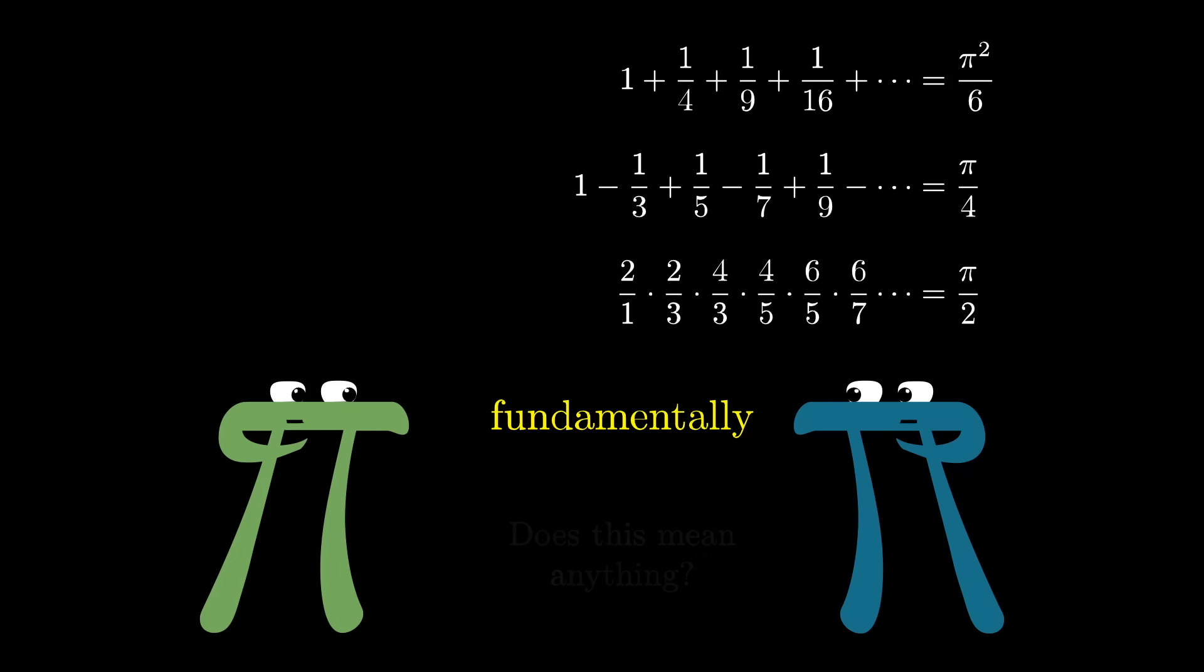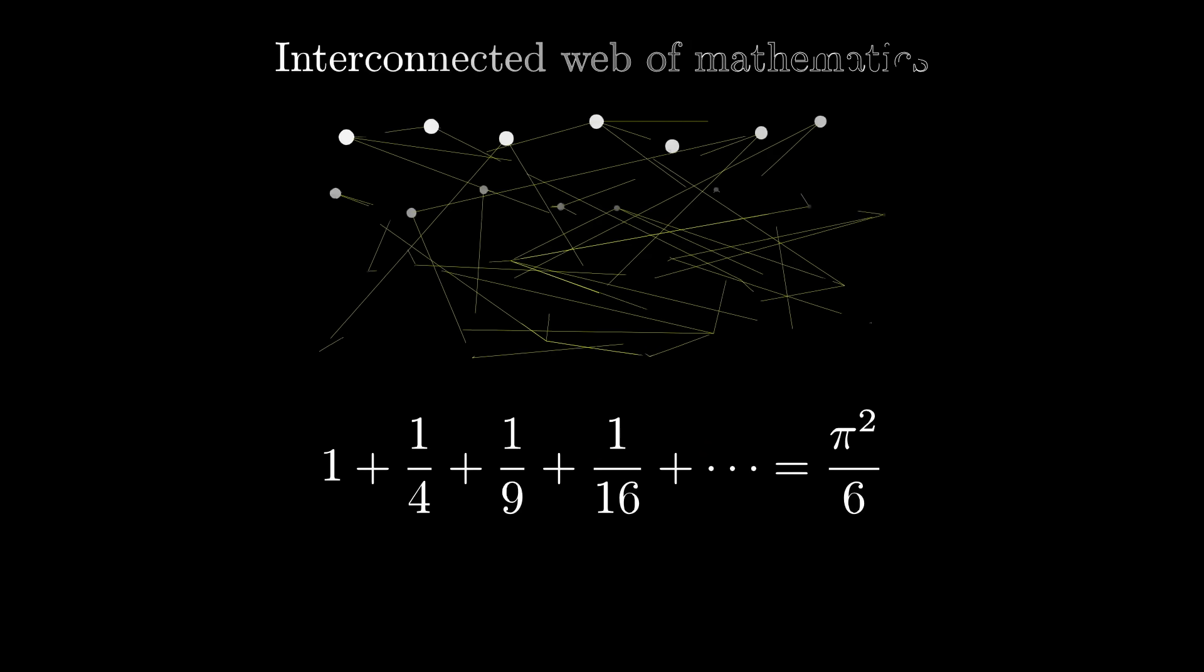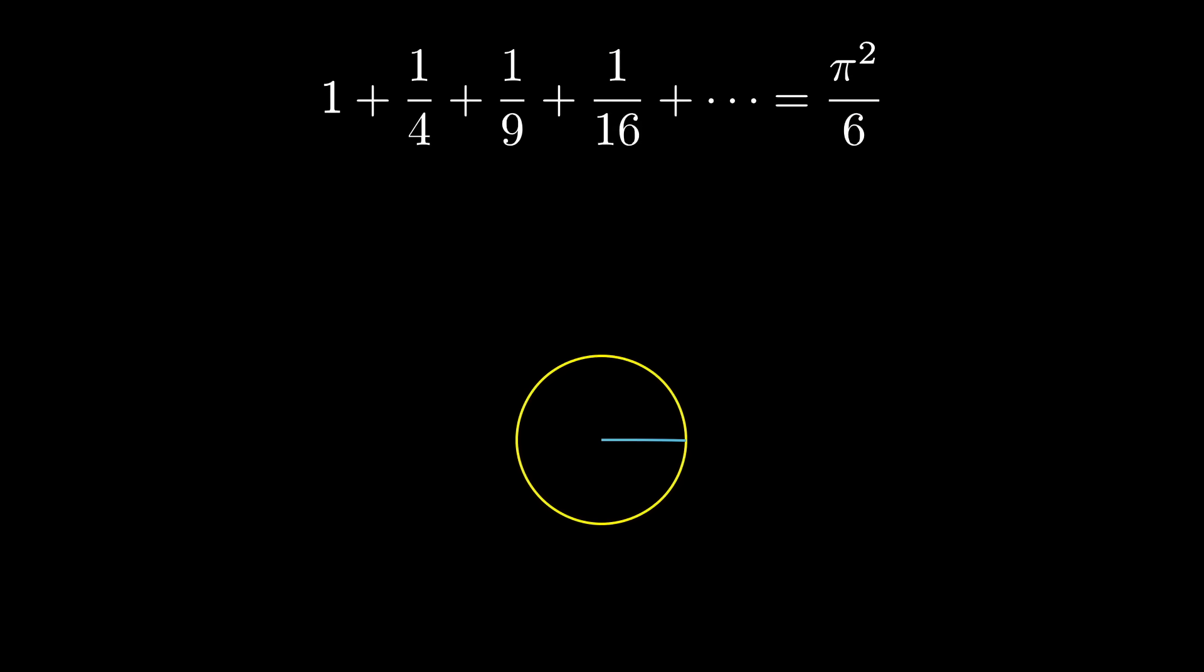I've said in a previous video that whenever you see pi show up there will be some connection to circles. And there are those who like to say that pi is not fundamentally about circles and insisting on connecting equations like these ones with a geometric intuition stems from a stubborn insistence on only understanding pi in the context where we first discovered it. That's all well and good, but whatever your own perspective holds as fundamental, the fact is pi is very much tied to circles. So if you see it show up there will be a path somewhere in the massive interconnected web of mathematics leading you back to circles and geometry. The question is just how long and convoluted that path might be, and in the case of the Basel problem it's a lot shorter than you might first think, and it all starts with light.